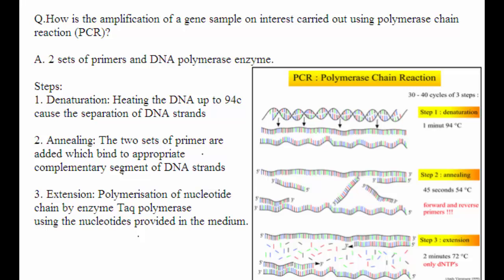Coming to the first step, denaturation: heating the DNA up to 94 degrees Celsius causes the separation of DNA strands. You can see in the figure the first step, upon heating, these two DNA strands will be separated at 94 degrees Celsius.